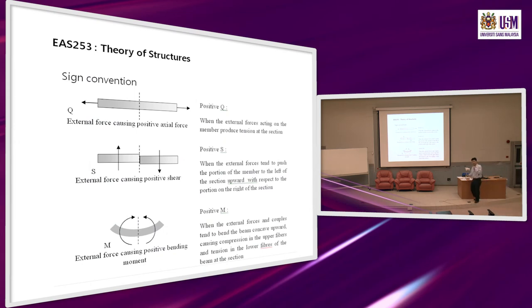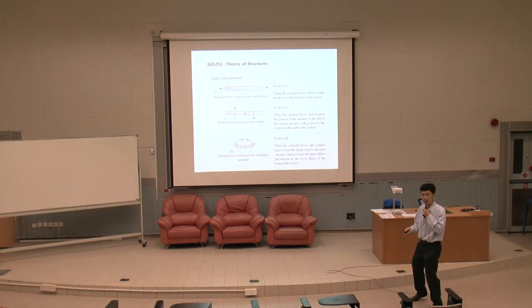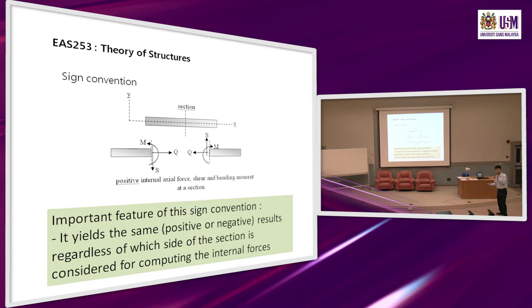When we talk about drawing shear force diagrams, bending moment diagrams, and axial force diagrams, the sign convention is important to remember. When you cut through a beam and separate it into two parts, the internal forces appear on the cut section. The sign convention used is: Q pointing left-to-right on the left side and right-to-left on the right; shear force pointing downward on the left and upward on the right; bending moment counterclockwise on the left and clockwise on the right.